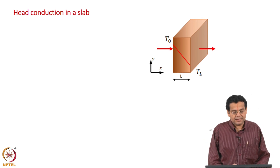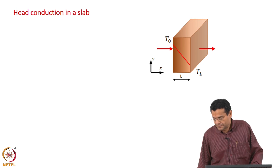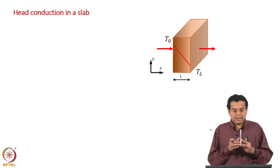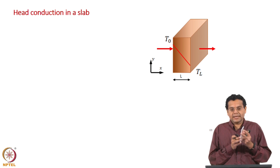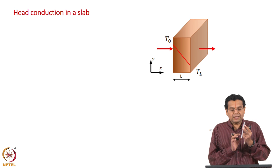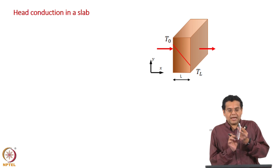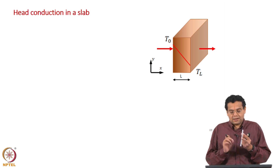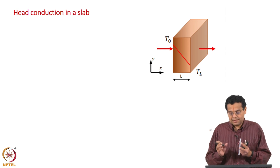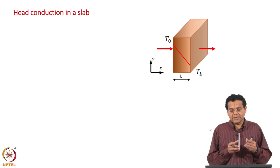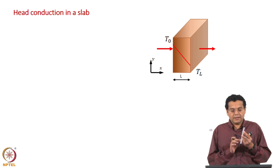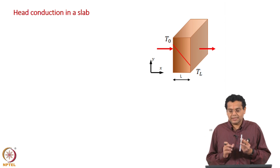Let us start with the first application: heat conduction in a slab. What we have is a slab where the two surfaces are maintained at two different temperatures — T naught and T L — and the thickness of the slab is L. We are interested in the temperature profile across the thickness of the slab. The surface at higher temperature transfers heat to the lower temperature surface along the positive x-axis by conduction.